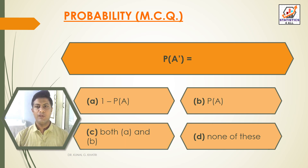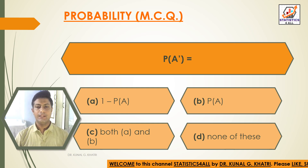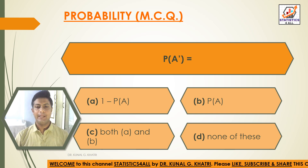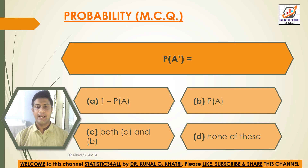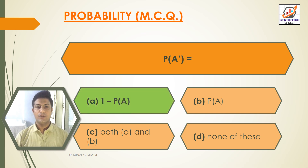Question 8: P(A') equals? Option A: 1 − P(A). Option B: P(A). Option C: Both A and B. Option D: None of these. Answer: Option A — P(A') = 1 − P(A).